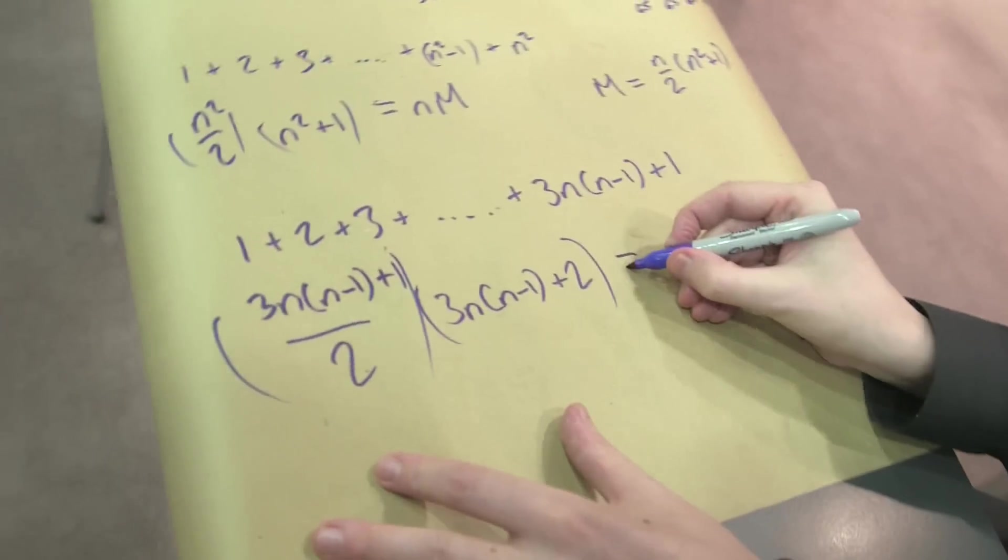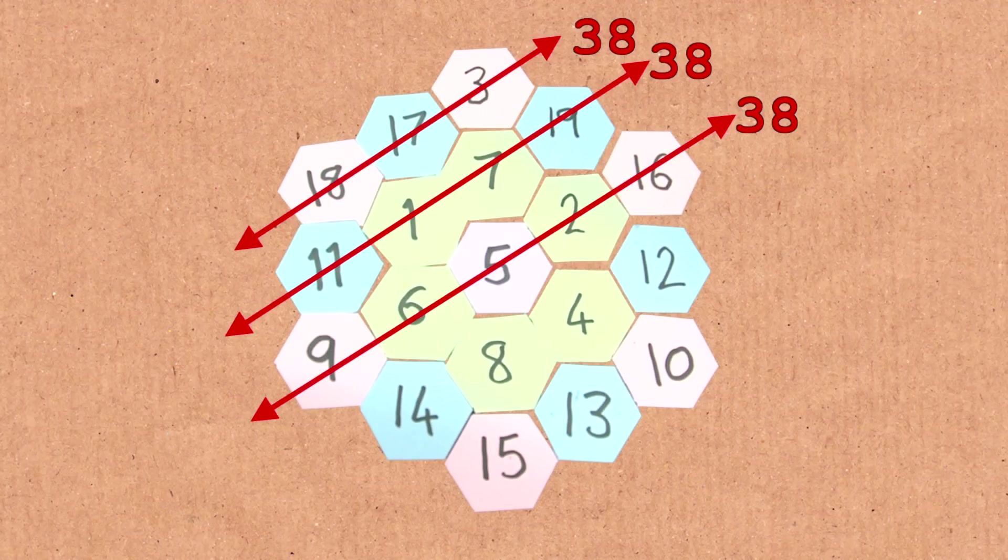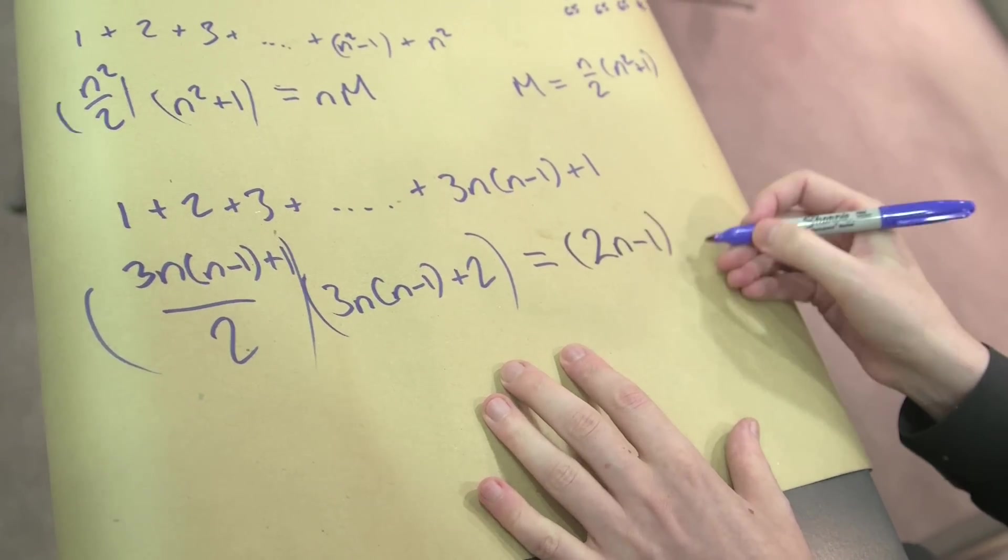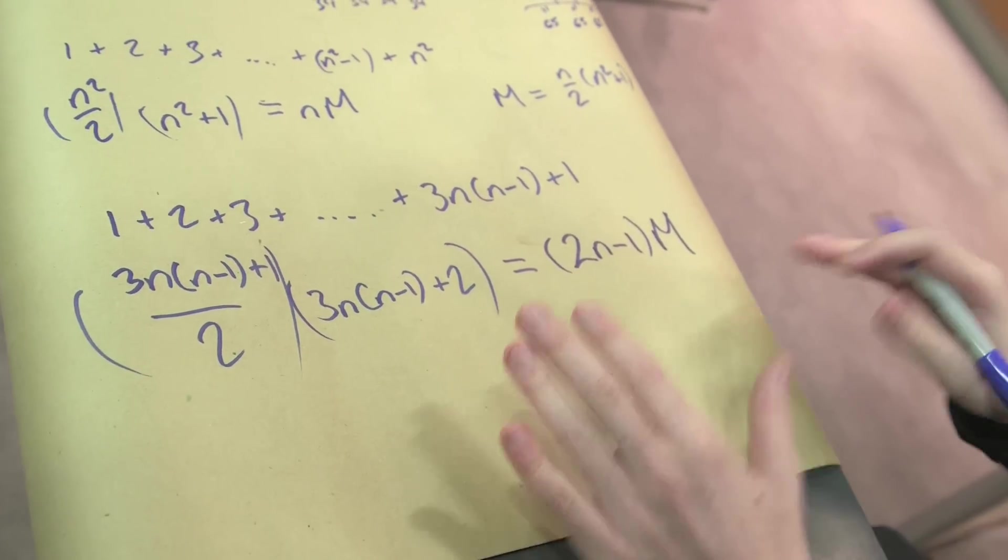On the other hand, with the magic hexagon, we know that each row is equal to the magic number. So how many rows do we have? We have 2n minus 1 rows, and they're all equal to the magic number m. So we solve that. We can work out what the magic number is.